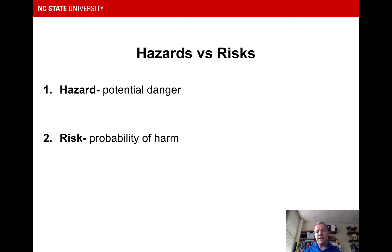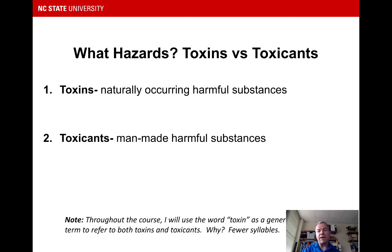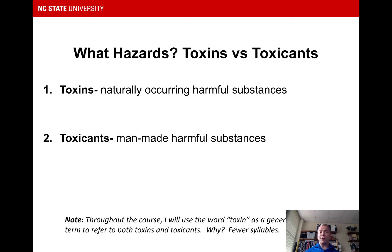Hazards are potential dangers and risks are related to the probability of harm — how likely it is that those hazards are going to do any harm to us. We can classify these things the same way a reporter would: the what, when, where, how, and why. In terms of hazards, we can think of toxins and toxicants — toxins being natural and toxicants being manmade. If I use the word toxin throughout the rest of the course, just realize it's shorthand for both. I'll try to be specific when pointing out manmade versus natural materials.